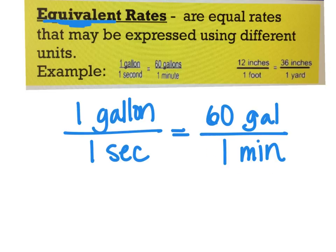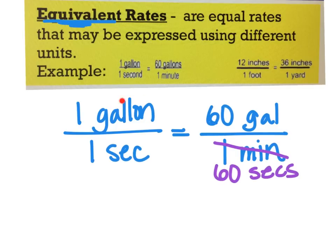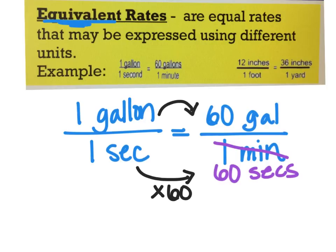I'm going to see if I can rewrite one of them so it's the same unit of measurement. Looking at minutes and seconds, I can easily change minutes — a minute is 60 seconds. So I'll cross that off and say one minute is exactly the same as 60 seconds. Now I'm comparing gallons to gallons and seconds to seconds. From one to 60 on the bottom, that's times 60. From one to 60 on top, that's also times 60. I was multiplying by the same thing, so these two rates are equal.